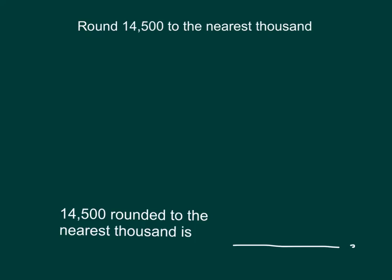Here we have another problem: we're rounding 14,500 to the nearest thousand. Let's start by drawing that vertical number line. We're going to answer that question again. When we're thinking about thousands, how many thousands are in 14,500? Fourteen.